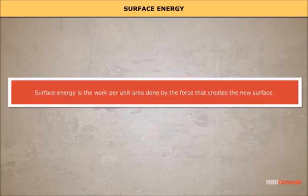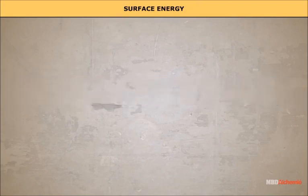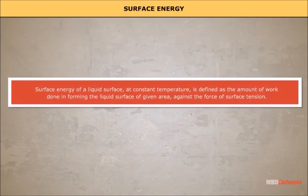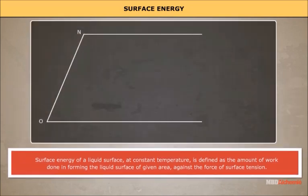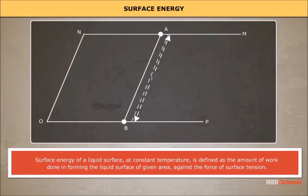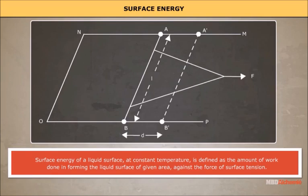Surface energy is the work done per unit area by the force that creates a new surface. In other words, the surface energy of a liquid surface at constant temperature is the amount of work done in forming a liquid surface of a given area against the force of surface tension. Suppose we move a bar by a small distance D — the area of the surface increases, and the system now has more energy, meaning work has been done against an internal force.